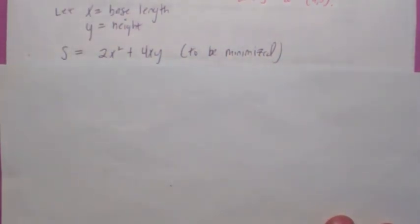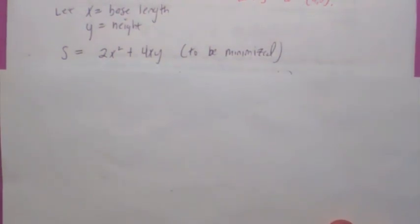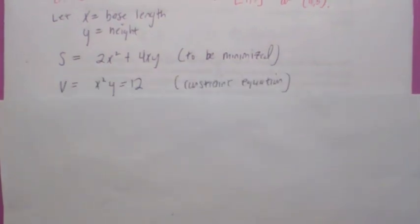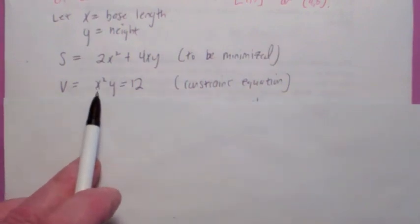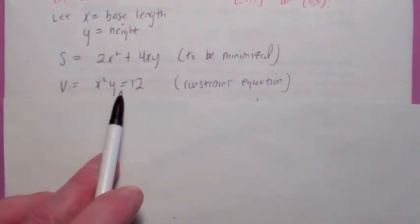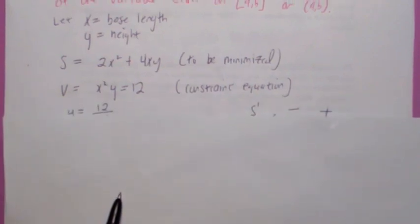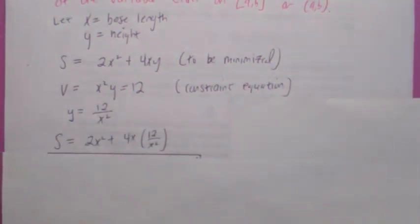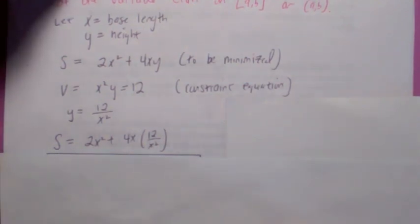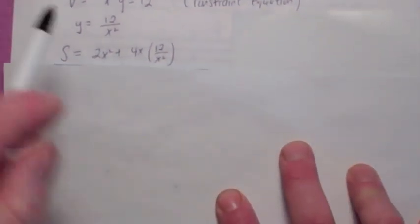The problem is that we have too many unknowns. We want to get s just in terms of one variable. The constraint equation is that the volume is always going to be 12. The volume of the box would be the length times width times height. So x²y = 12. Let's get rid of y. y = 12/x².